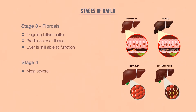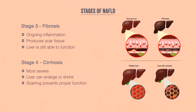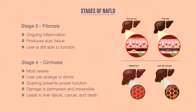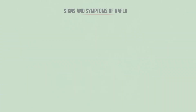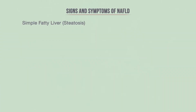The most severe stage takes place after years of inflammation and scar tissue buildup. This point of cirrhosis causes the liver to enlarge or shrink, and the scarring becomes too much for the liver to function properly. The damage is permanent and irreversible at this juncture and can lead to liver failure, liver cancer, and death.